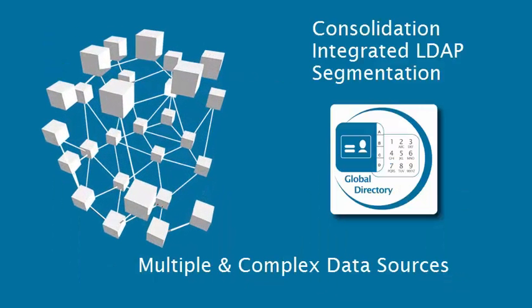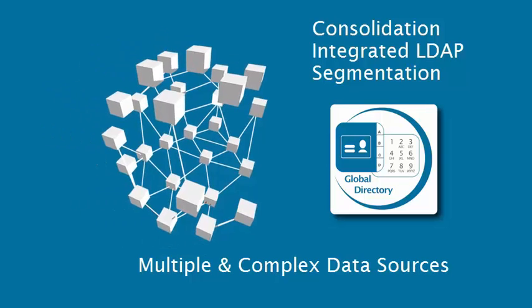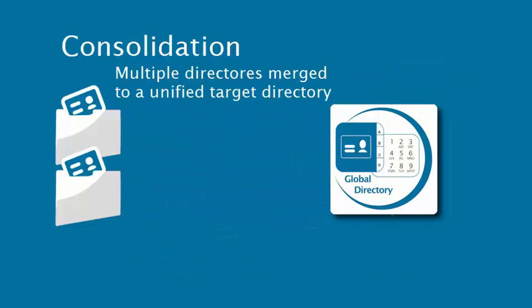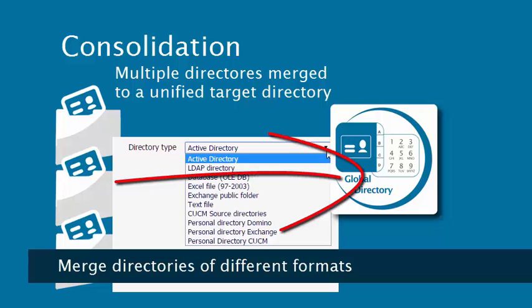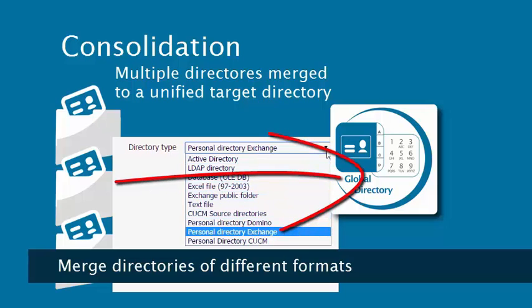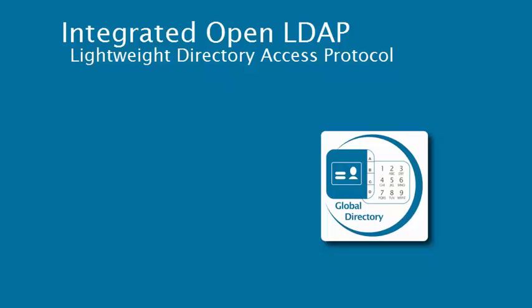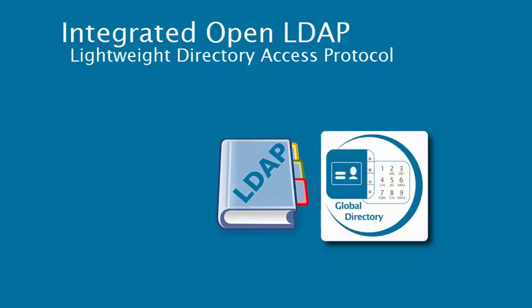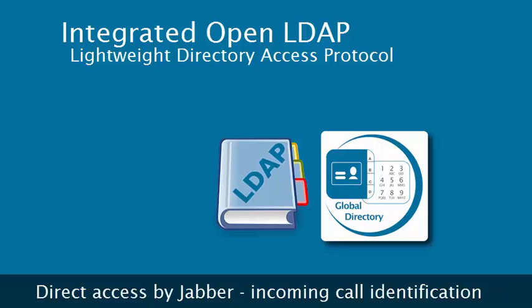When the information systems are multiple and complex, Global Directory provides many important features such as consolidation. Multiple directories may be merged into a unified target directory, even if the source directories are in different formats. Global Directory includes an integrated LDAP directory in which all of the consolidated directories may be stored and accessed.